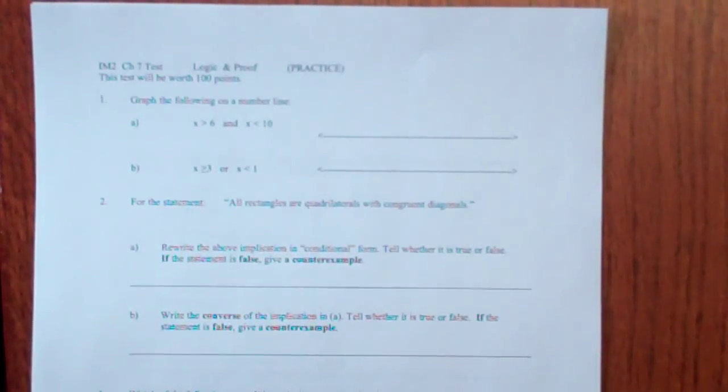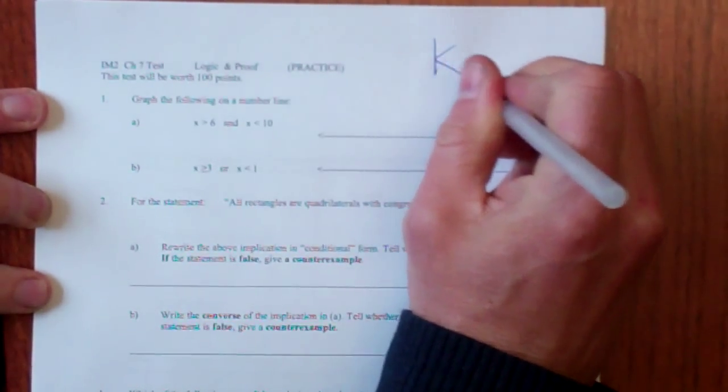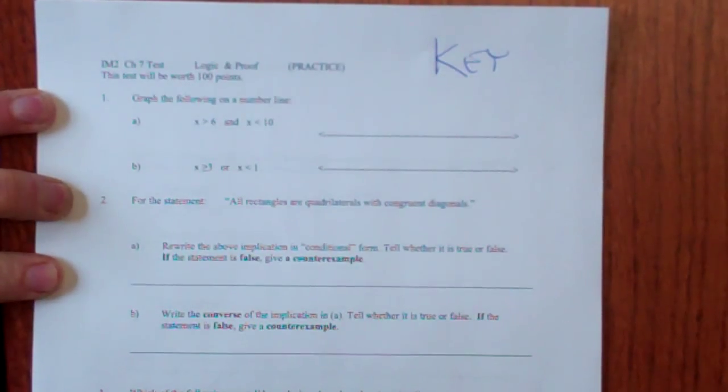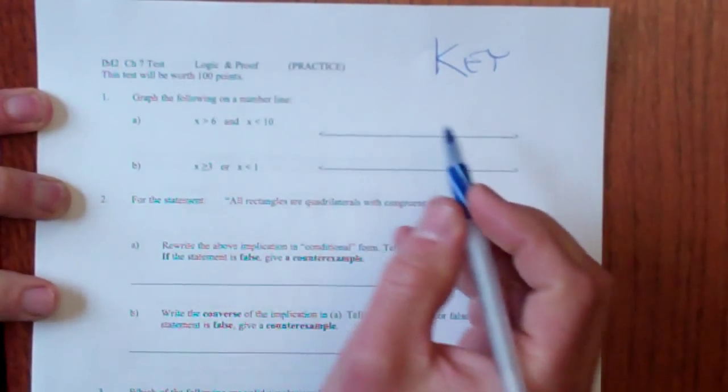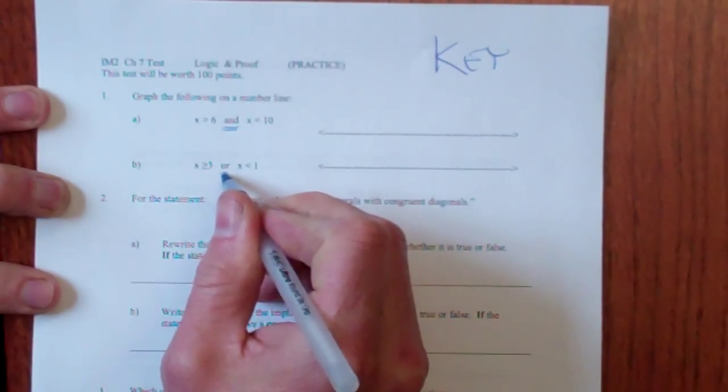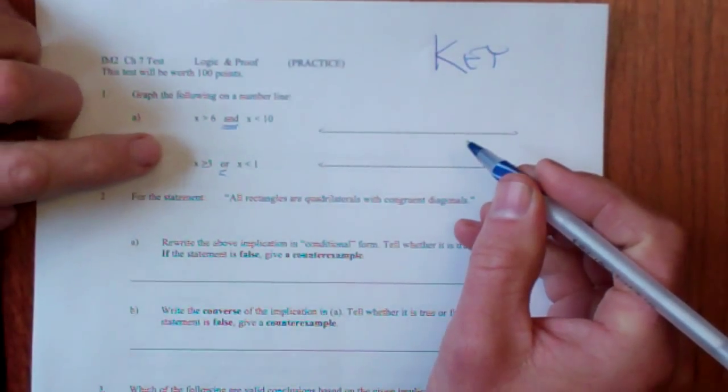Okay, here we go. One shot at the answer key here. Alright, it says graph the following on a number line. This is really just a test of your ability to understand the difference between the words AND and OR. So that's not totally tough, just use your common sense.